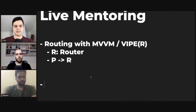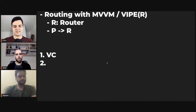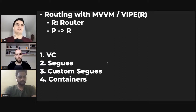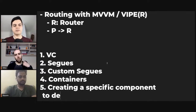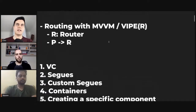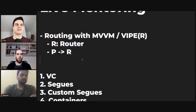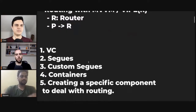So let's start with the view controller — that's the basic one. Second, segues. Then you can go to custom segues. You can do containers, or create a specific component to deal with routing, like Viper does — having a router. Some people call them flows, some people call them coordinators. But the idea is exactly the same: a specific component with a single responsibility for handling the whole routing part.